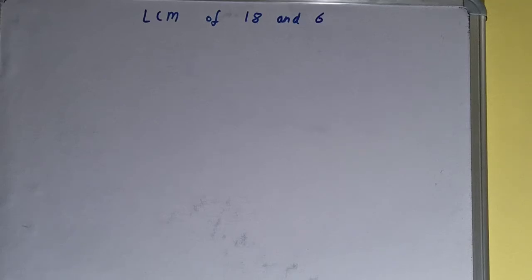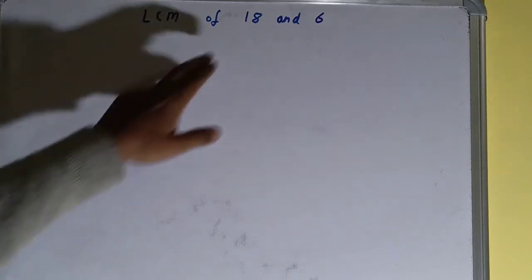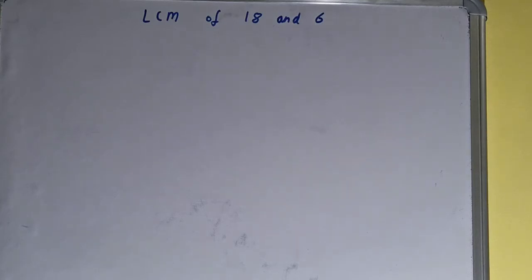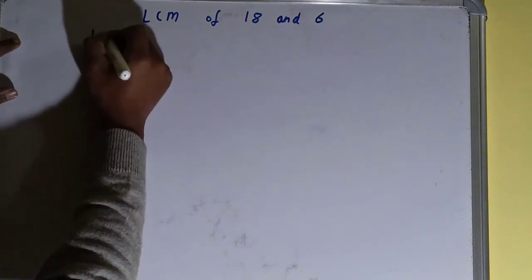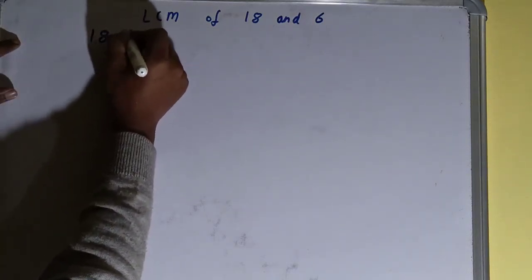Hello friends, in this video I'll be helping you with the LCM of the numbers 18 and 6. Let's start. To find it out, we need to write both the numbers like this: 18 comma 6.